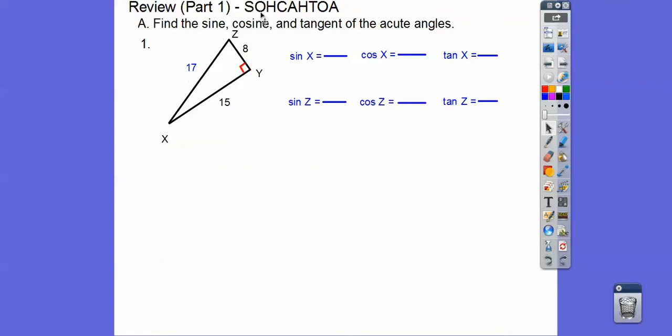So SOHCAHTOA, sine is opposite over hypotenuse. So the sine of x would be 8 over 17. The cosine is adjacent over hypotenuse, and then the tangent of x is opposite over adjacent, 8 over 15 right there.